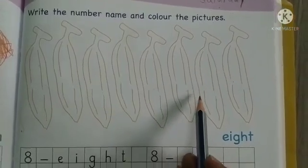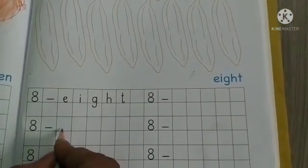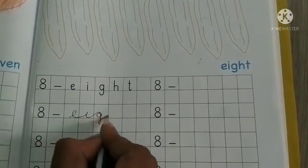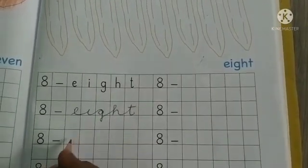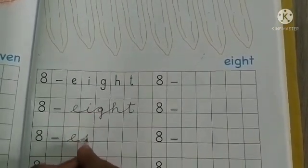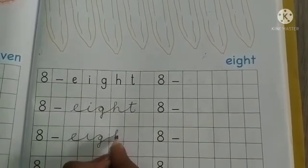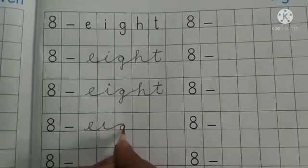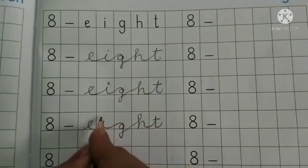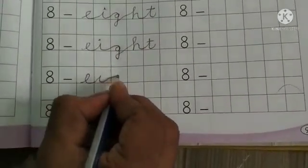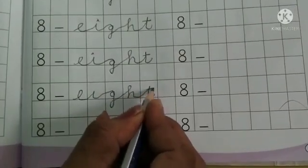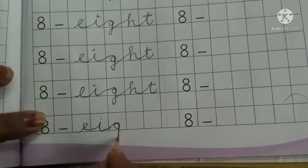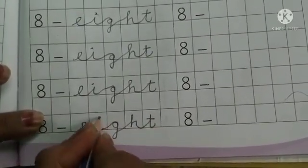In cursive writing, number name spelling: E-I-G-H-T, eight. E-I-G-H-T, eight. E-I-G-H-T, eight.